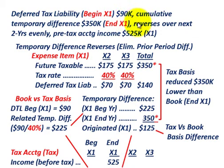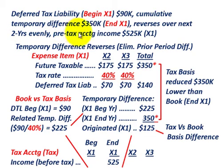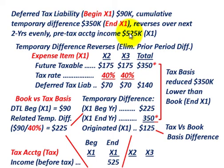This deferred tax liability is going to reverse itself over the next two years evenly. We're also going to have a pre-tax accounting income of $525,000. What we're going to try to determine is the tax payable, our tax expense for the year, and any deferred tax liability. So what we're talking about here for this temporary difference is how it's going to reverse.